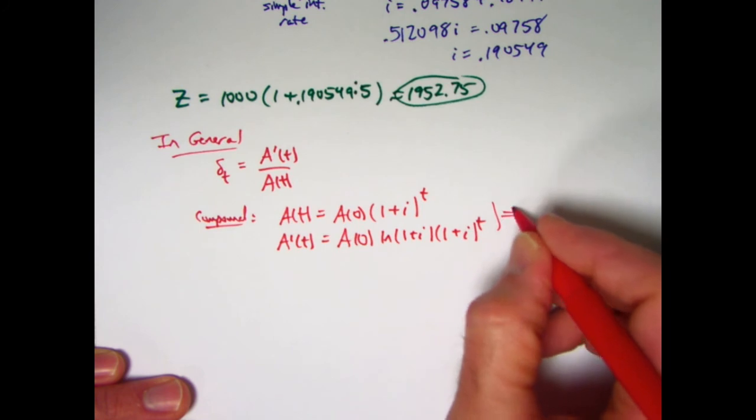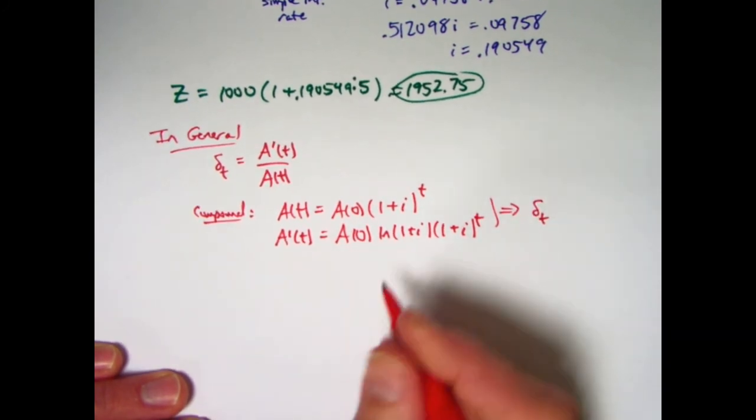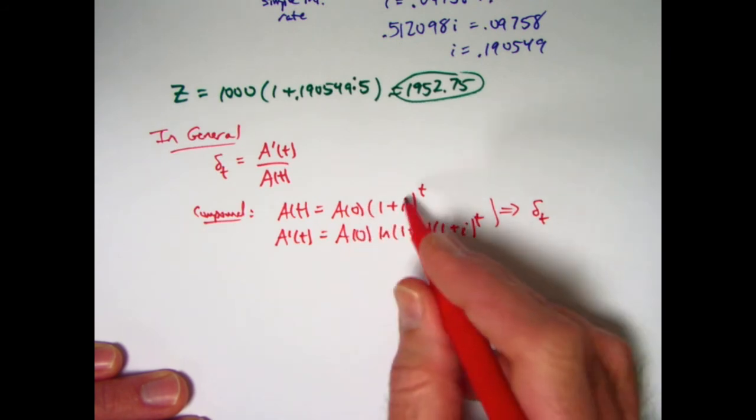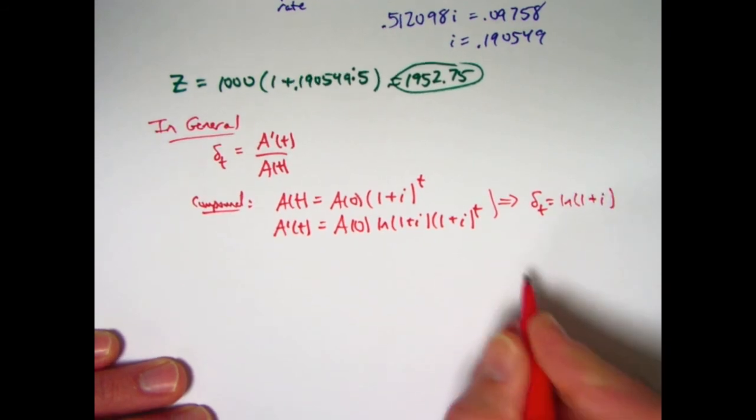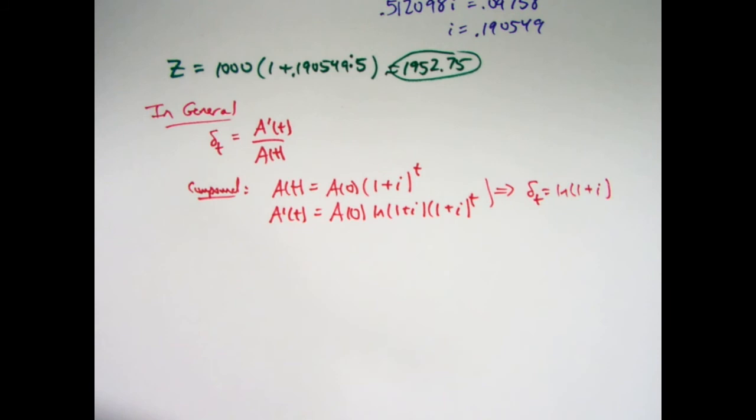If you now divide A prime by A, everything cancels except for the natural log. The A of 0's cancel, and the 1 plus I to the T's cancel. After you do the division, you get natural log of 1 plus I, which is a constant. So in fact, delta sub T is a constant function of T, you can just call it delta.